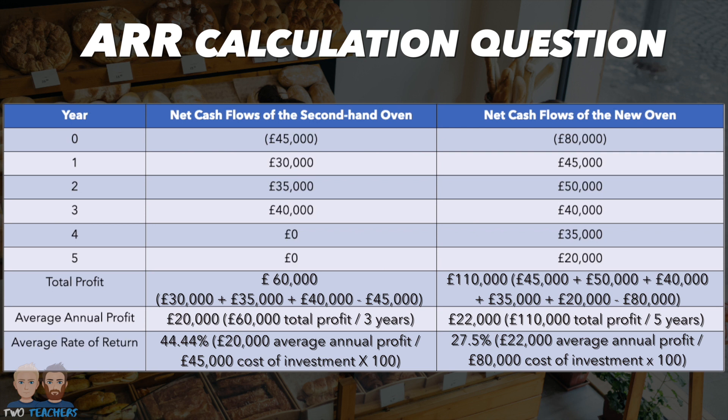So, in this scenario, the second-hand oven has a better ARR of 44.44% in comparison to the new oven which has an ARR of 27.5%. This shows that buying the second-hand oven would be the best financial decision as the percentage return from the money invested would be higher. But it's important to note that the new oven would generate more profit for the business over its lifetime. Now that the bakery business has this information, it can make a more informed investment decision on which oven to purchase.